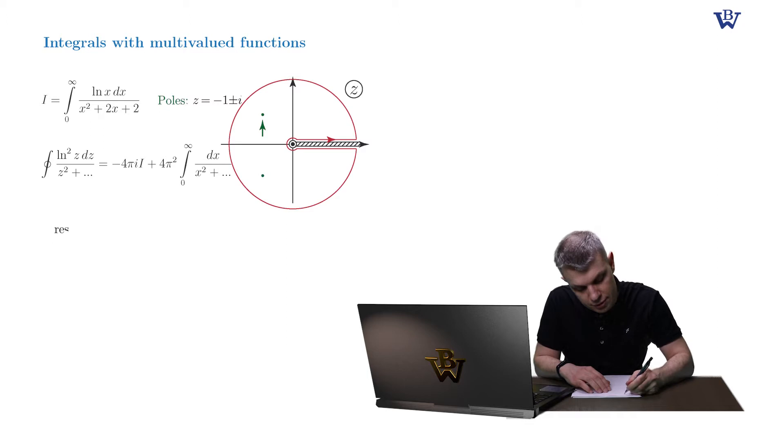So the residue of f at a simple pole is simply equal to the value of the numerator at this point, logarithm squared, divided by the derivative of the denominator, which is 2z plus 2.